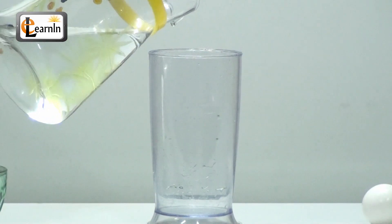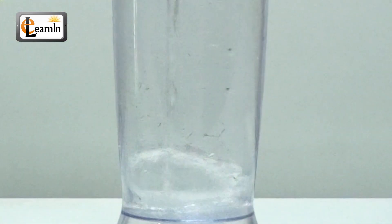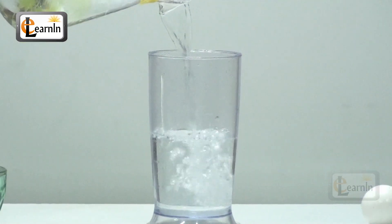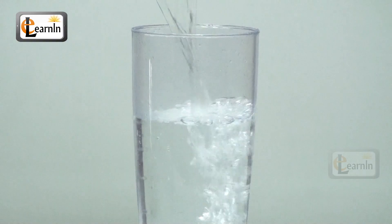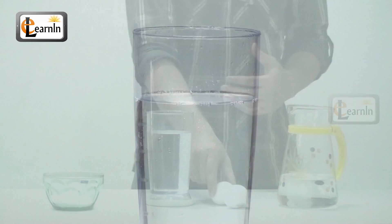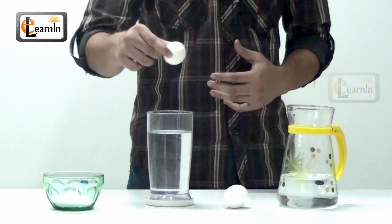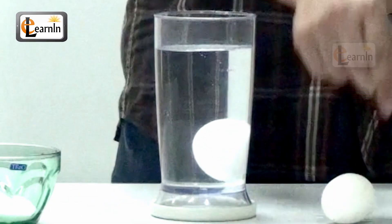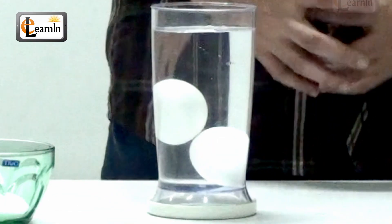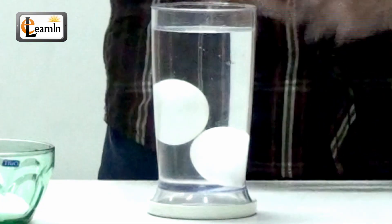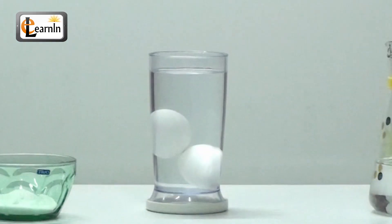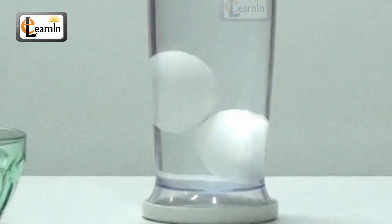Pour some water into the measuring glass until it's about half full. Now take an egg and put it gently into the glass. You should observe that the egg sinks and dives to the bottom of the glass.